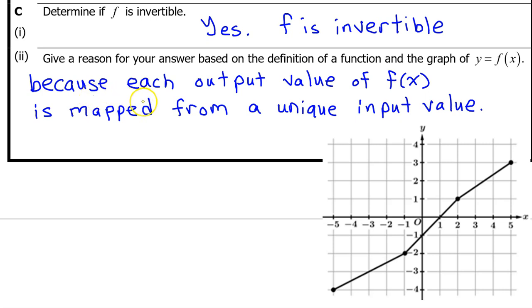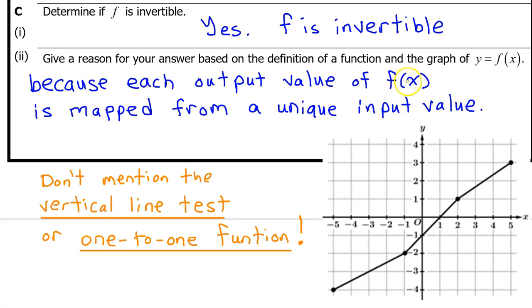Before I end the video, let me show you what the justification would look like for a function that is invertible, that does have an inverse. You would say, yes, f is invertible, because each output value of f of x is mapped from a unique input value. If the answer is yes, you don't need any examples of anything. Yes, we can tell that f is invertible. It does have an inverse, because it passes the horizontal line test. Any horizontal line only hits one point. However, if you base your justification on the vertical line test, or the fact that this is a one-to-one function, you will lose the point.